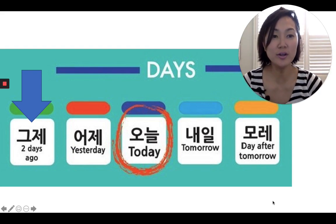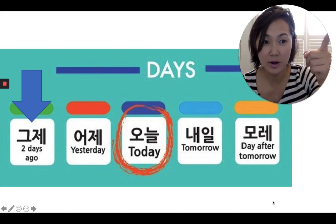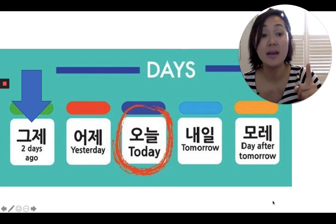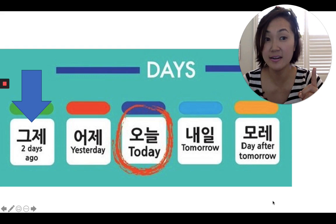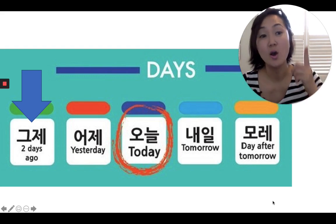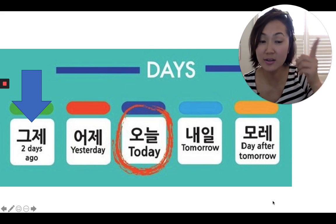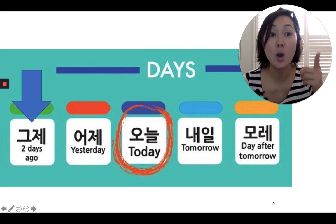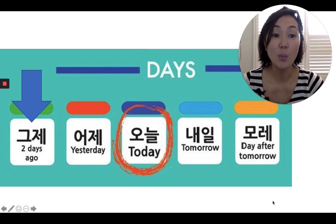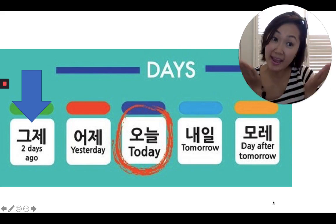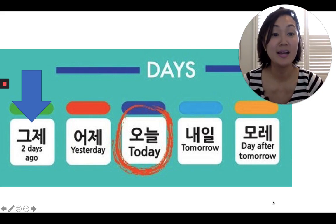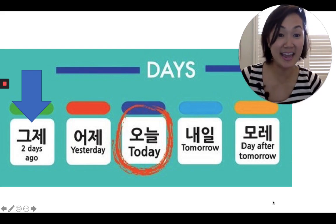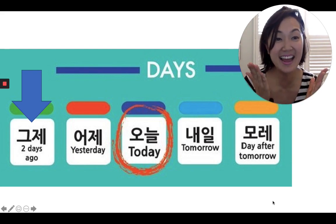We learned 내일 is tomorrow. But what about the day after tomorrow? You say 모래. Two days in the future — the day after tomorrow — you say 모래. So you can say 모래는 뭐해요? And if you want to say the day after tomorrow I'm going to Disneyland, you say 모래는 Disneyland 가요?